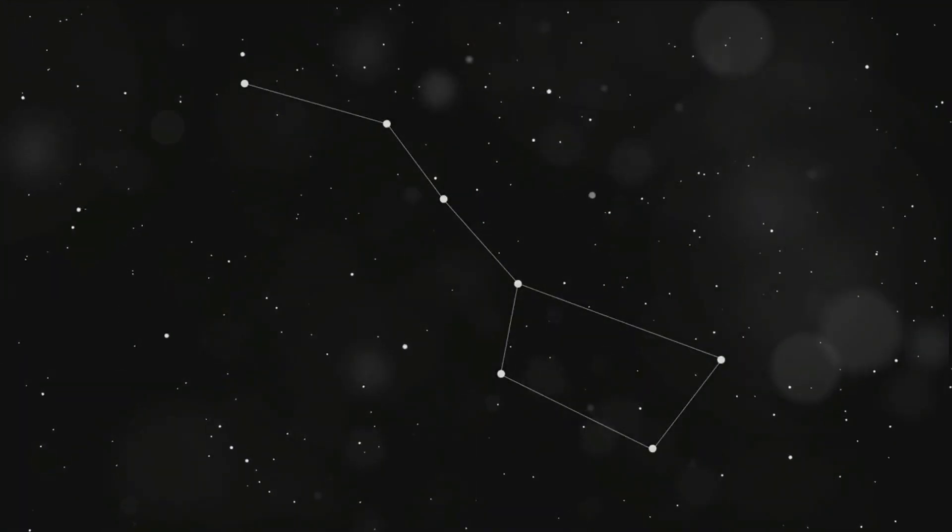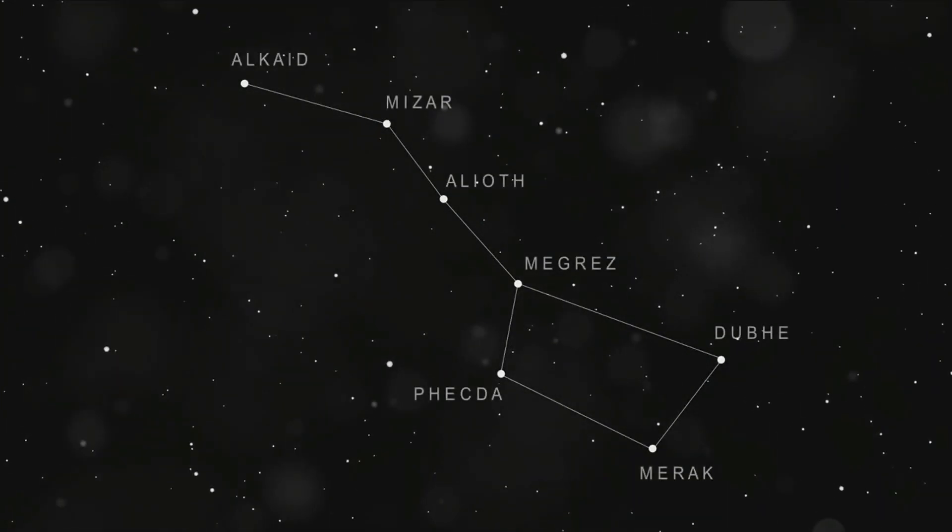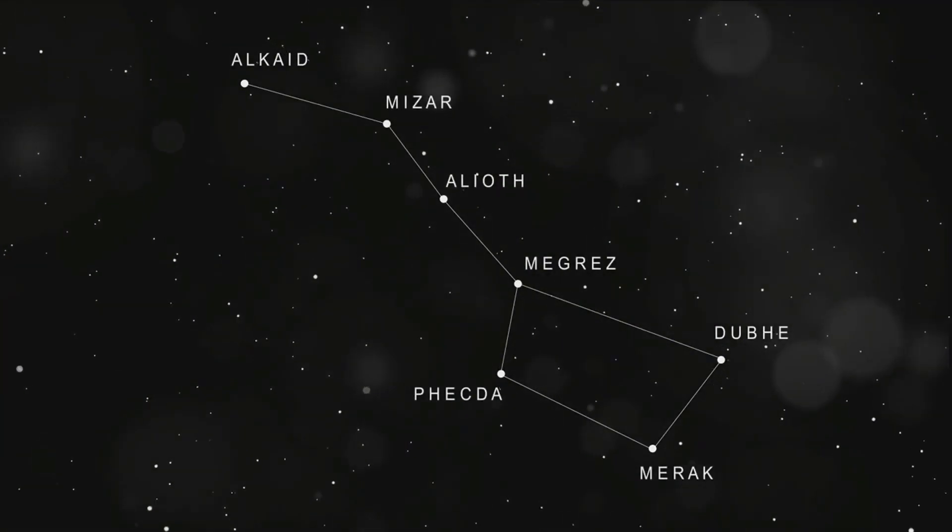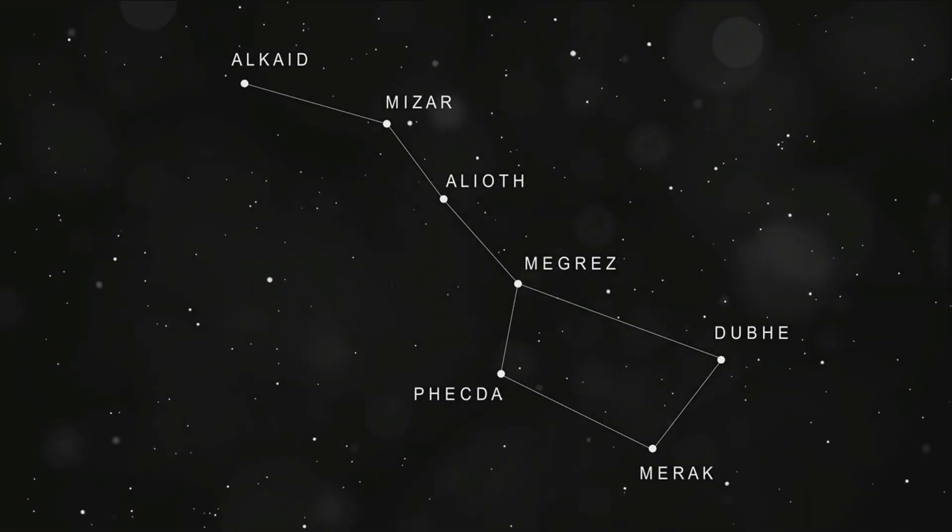Another famous constellation is Ursa Major, also known as the Big Bear. You might be more familiar with a part of it called the Big Dipper, a group of seven bright stars shaped like a ladle or a wagon.